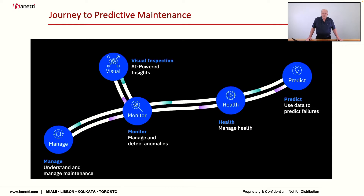Over the years, IBM and others have developed capabilities above and beyond traditional enterprise asset management solutions. The Internet of Things was a hot topic — how do we monitor assets in real time? How do we visually inspect assets remotely? How do we assess asset health and run analytics? Most importantly, how do we get to predictive maintenance — knowing when something will break with high confidence so we can plan outages instead of responding to emergencies?